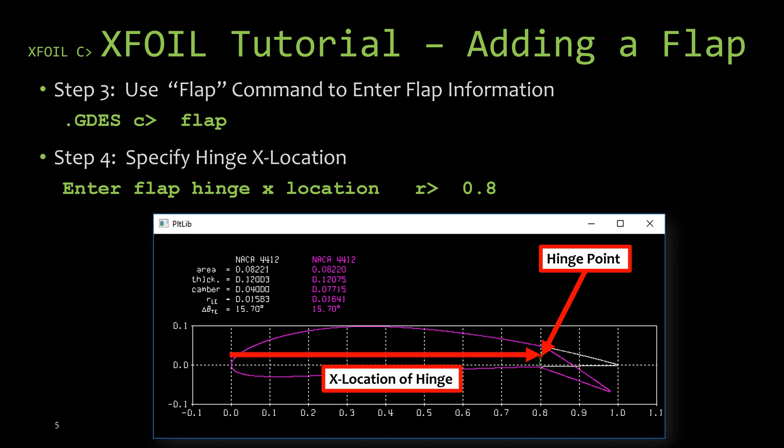Now that we are dropped down into the GDES menu, the geometric design menu, we're going to use the flap command to add a flap onto our airfoil shape. So go ahead and type FLAP into the command prompt and hit enter. This command requires some additional information before it can add the flap to our airfoil. So if you knew ahead of time what those parameters are, you could have just entered it right there when you typed in flap. But in this tutorial, we're going to leave those off so that XFOIL will prompt us on each individual value and we'll talk about each one individually.